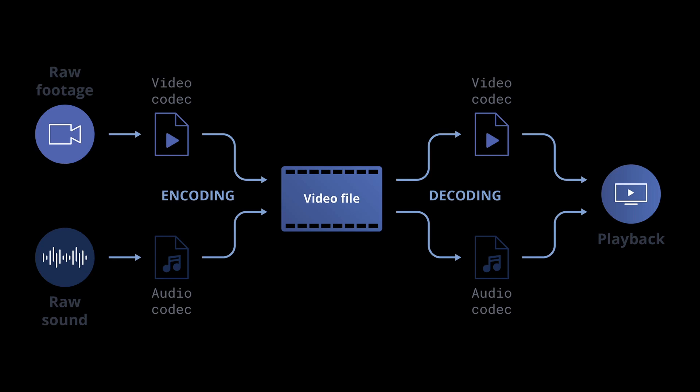H.264 and H.265 are both video codecs — technology that encodes your raw footage so the file isn't massive, and then decodes it for playback. But why should you choose H.265 over H.264, or vice versa, when streaming or recording?